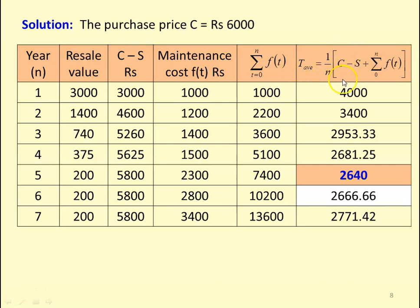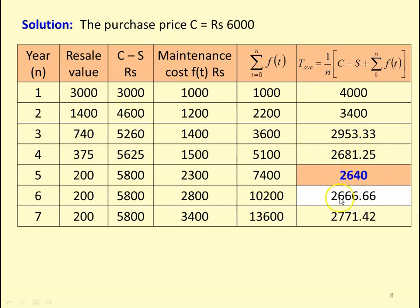Substituting into T-average = (1/n) × [C − S + Σf(t)]: Year 1 — (3000 + 1000)/1 = 4000; Year 2 — (4600 + 2200)/2 = 3400; Year 3 — (5260 + 3600)/3 = 2953.33; Year 4 — (5625 + 5100)/4 = 2681.25; Year 5 — (5800 + 7400)/5 = 2640; Year 6 — (5800 + 10200)/6 = 2666.66; Year 7 — (5800 + 13600)/7 = 2771.42. The values decrease from 4000 down to 2640 at Year 5, then increase to 2666.66 and 2771.42.